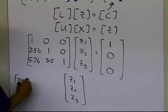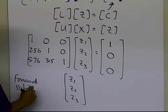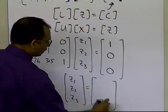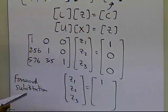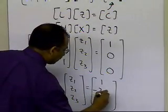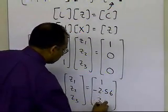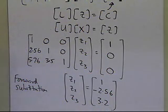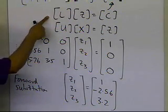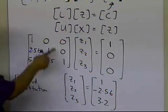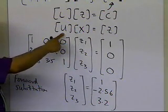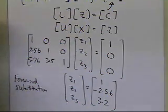The forward substitution steps of LU decomposition give the values Z1 = 1, Z2 = -2.56, and Z3 = 3.2. Now that we've solved L times Z equals C, we take these Z values, put them on the right-hand side, and use the upper triangular matrix U to find X by back substitution.